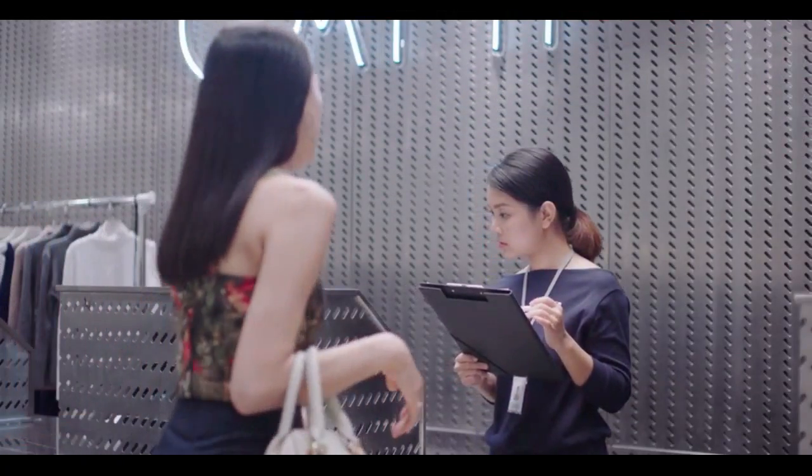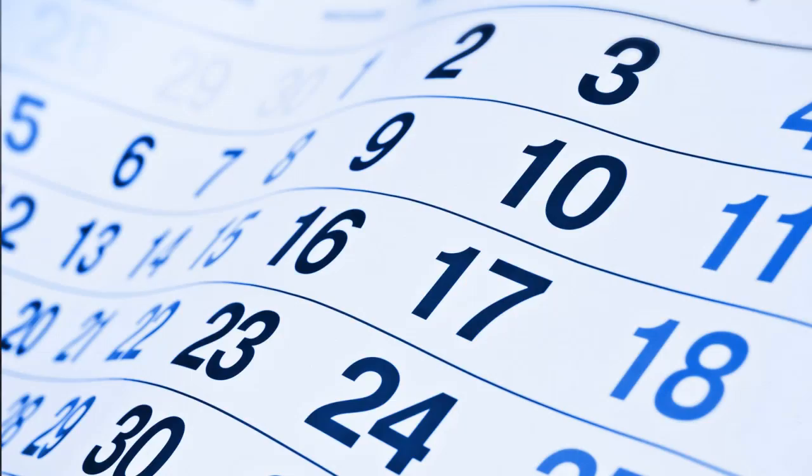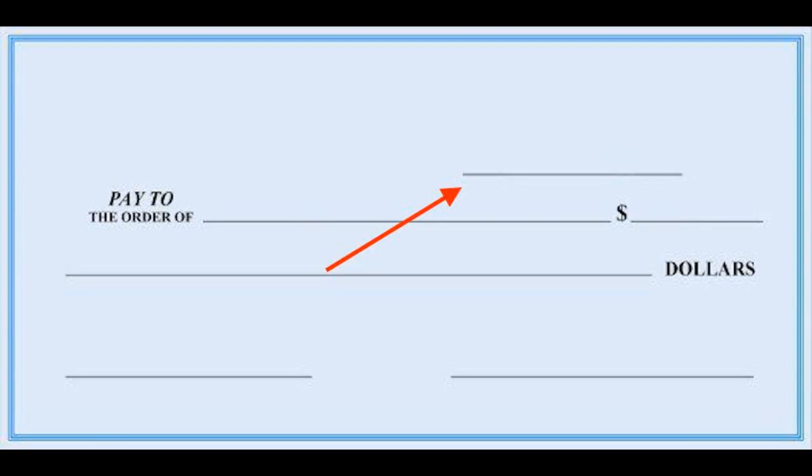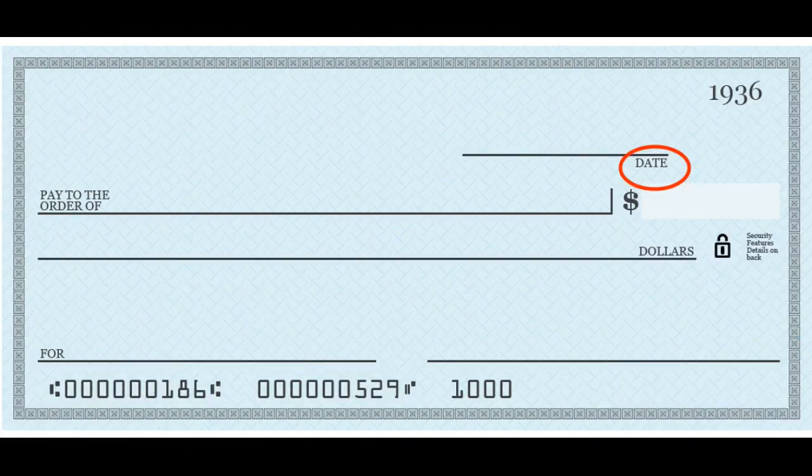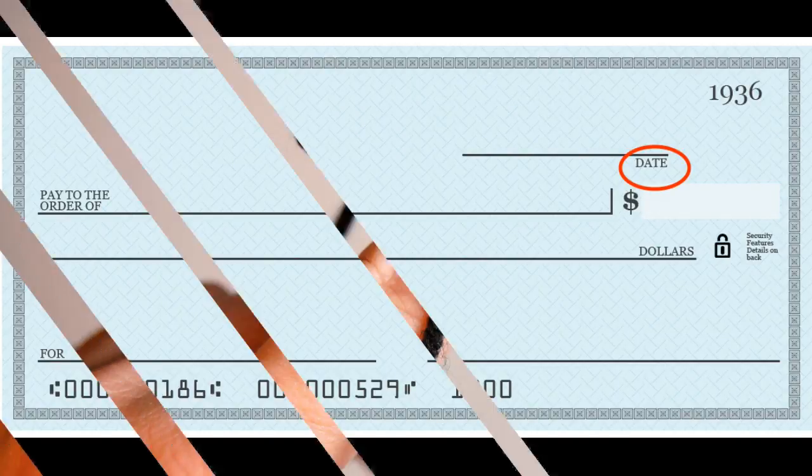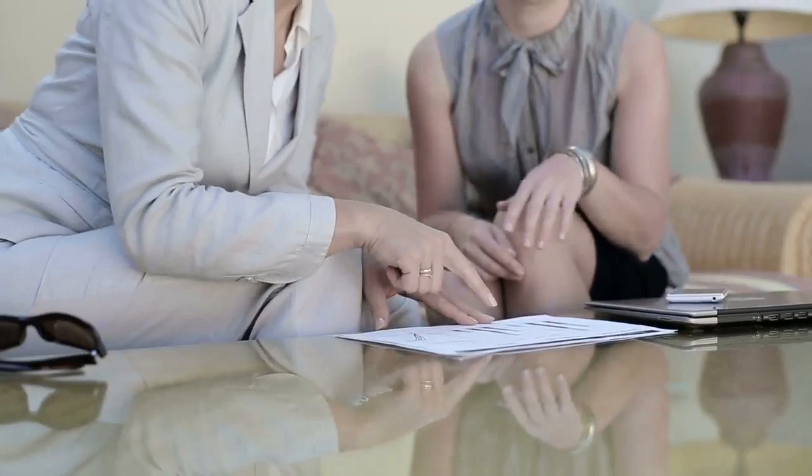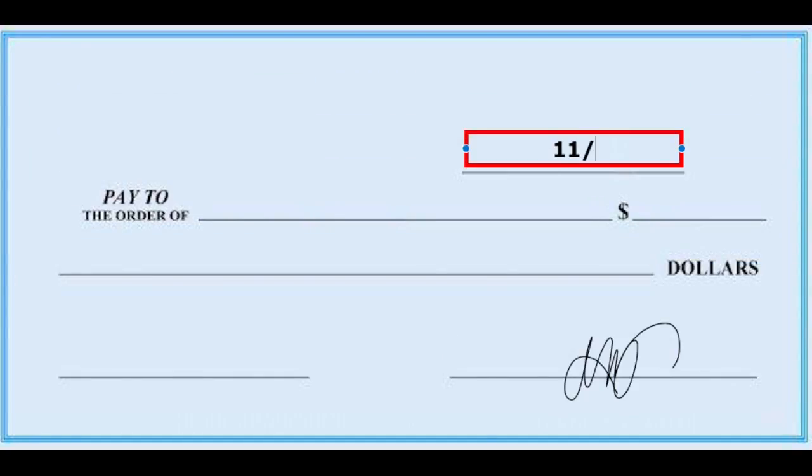Step number one, write the date on the blank located in the upper right corner of the check. Most have a label for this blank. Remember that you are issuing a legal document. Make sure to put the date that you will sign it, and not before or after.